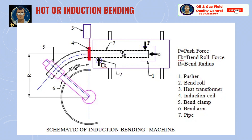You can see a schematic diagram of an induction bending machine where you can see the pusher, bend roll, heat transformer, induction coil, bend clamp, bend arm, and the job which is the pipe.